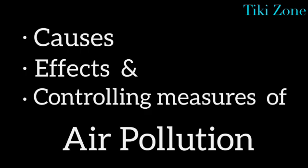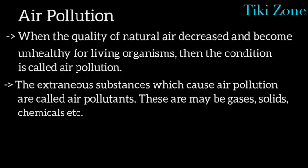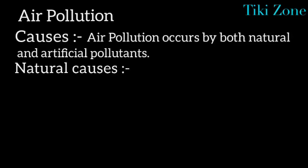Hello everyone, in this video we are going to discuss air pollution — its causes, effects, and controlling measures. First of all, you have to know what air pollution is. When the quality of natural air decreases and becomes unhealthy for living organisms, that condition is called air pollution. The extraneous substances which cause air pollution are called air pollutants, and these may be gases, solids, or chemicals.